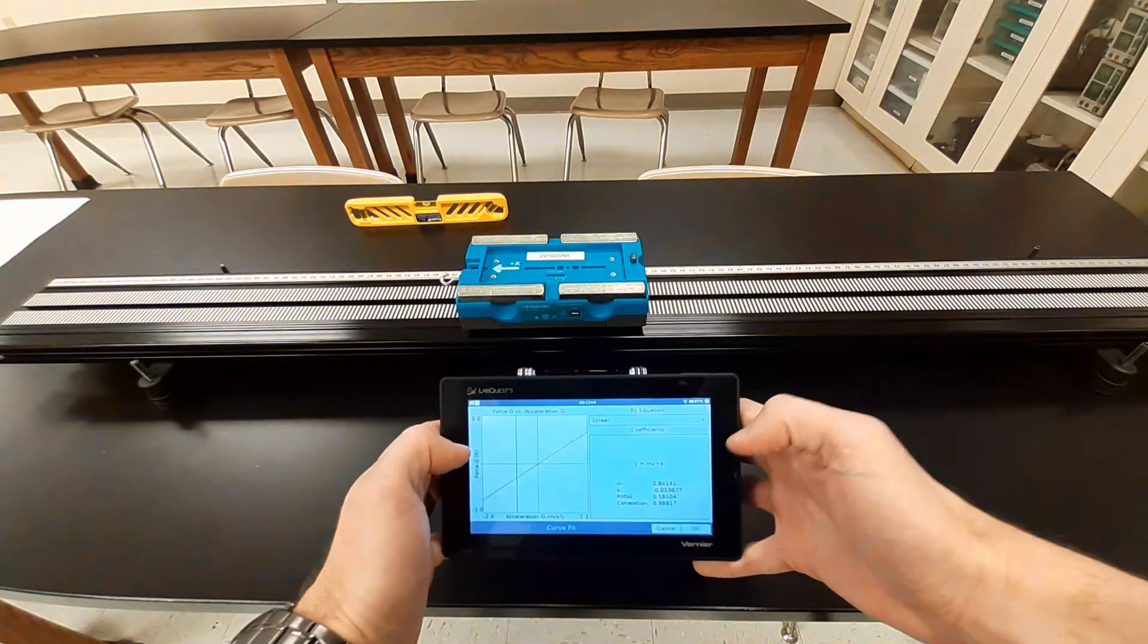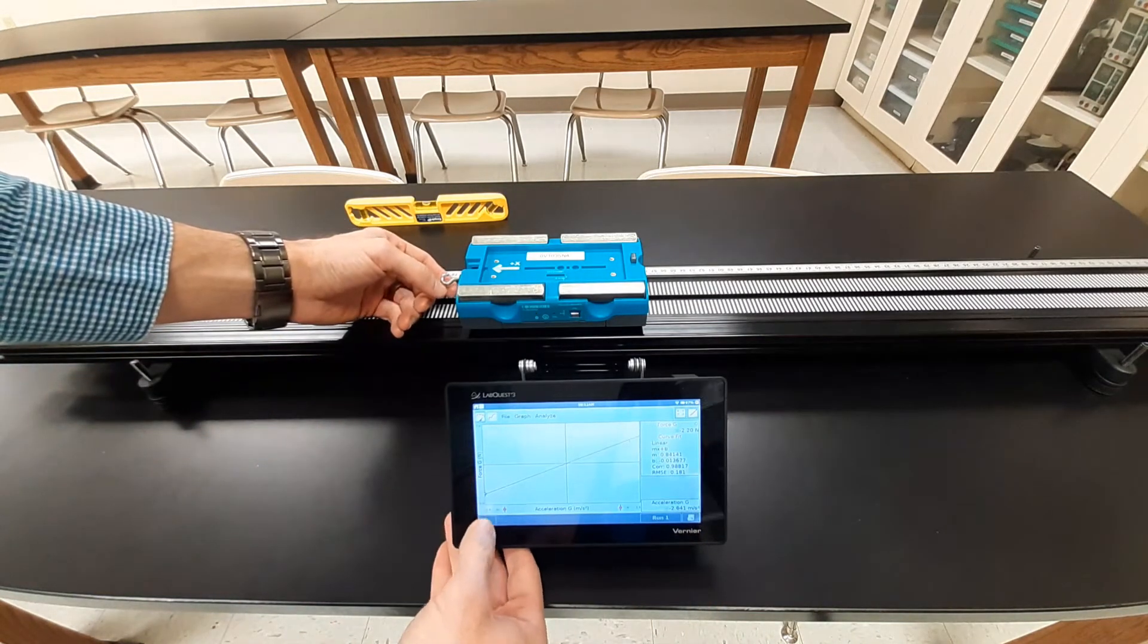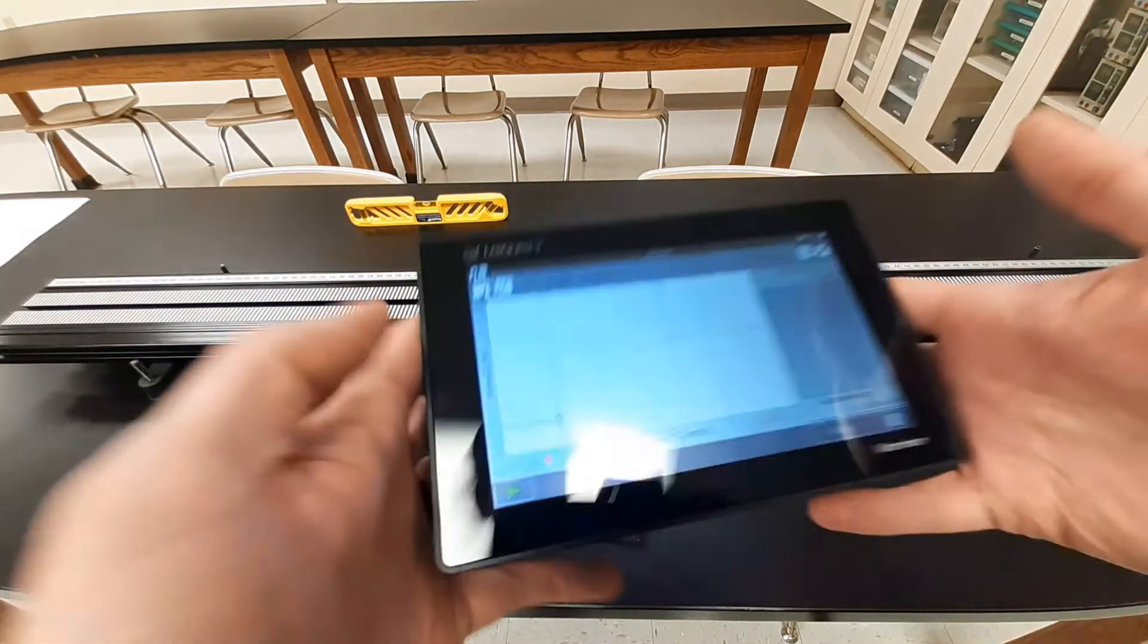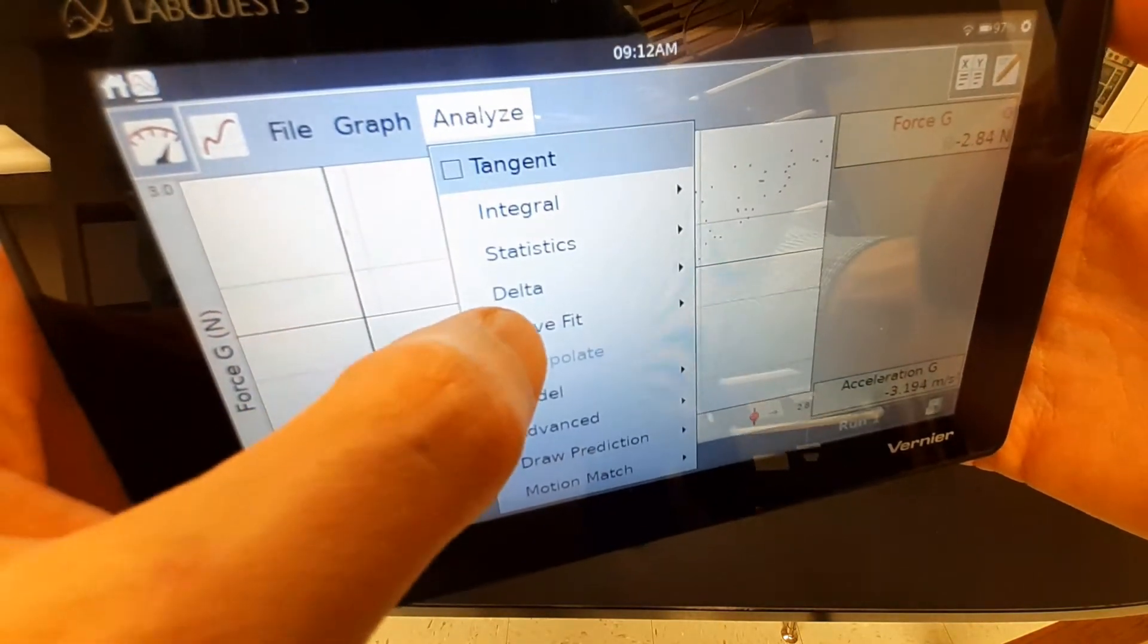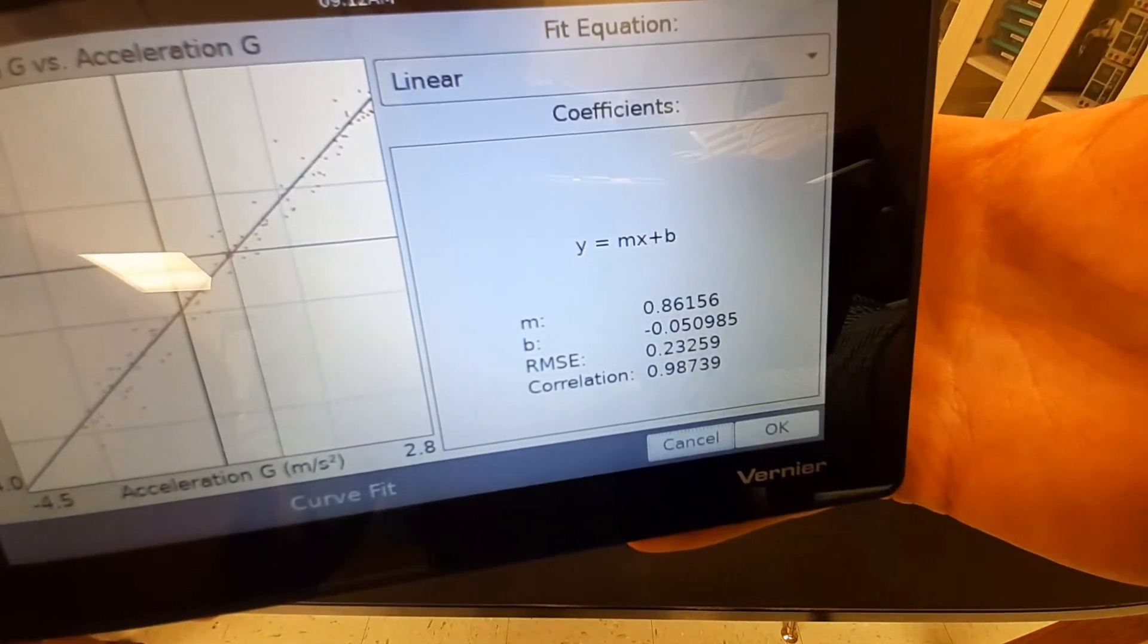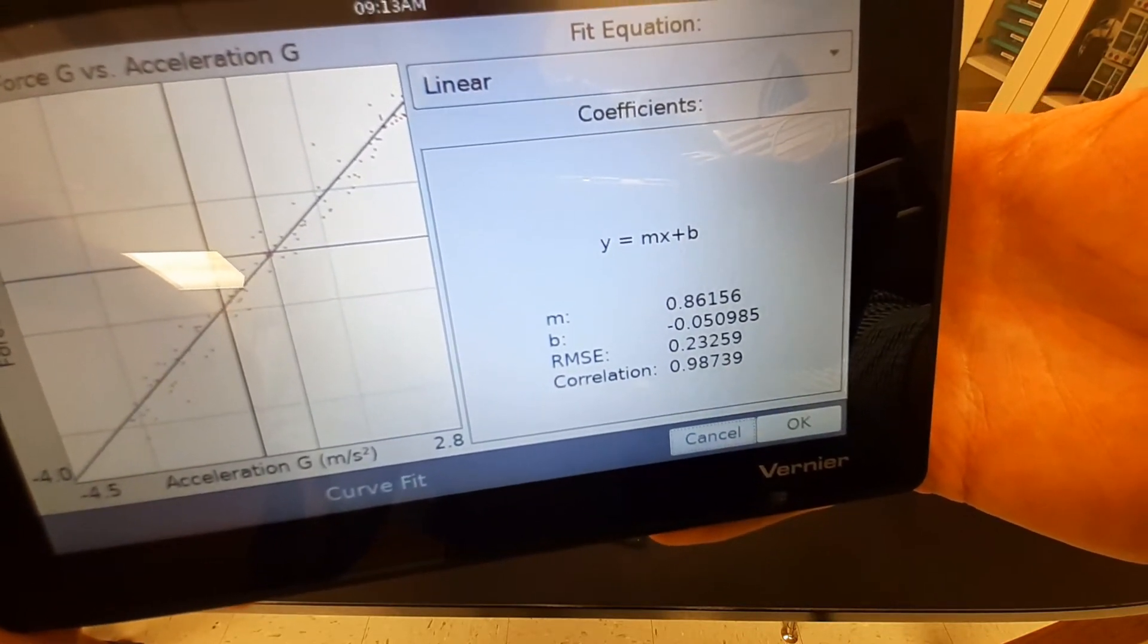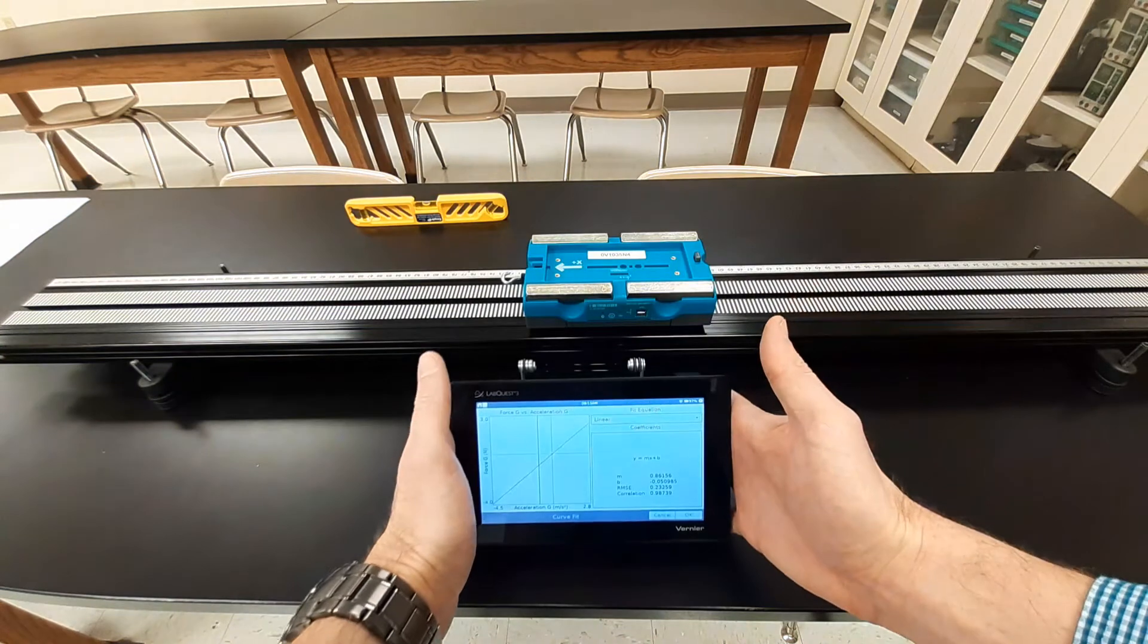And we'll go straight into doing trial number two. So I will start my data collection again. Again, pulling on my car, sometimes a little harder, sometimes a little softer. We got our data plotted out here, lots of points all over the place. We're going to analyze that curve fit. Now we have a slope of 0.8162 and a y-intercept of negative 0.050985. Round off a few of those decimal places will be perfectly fine. So that was trial two.